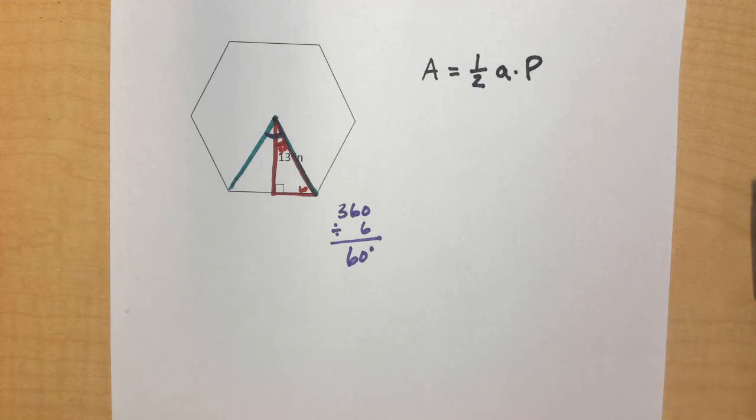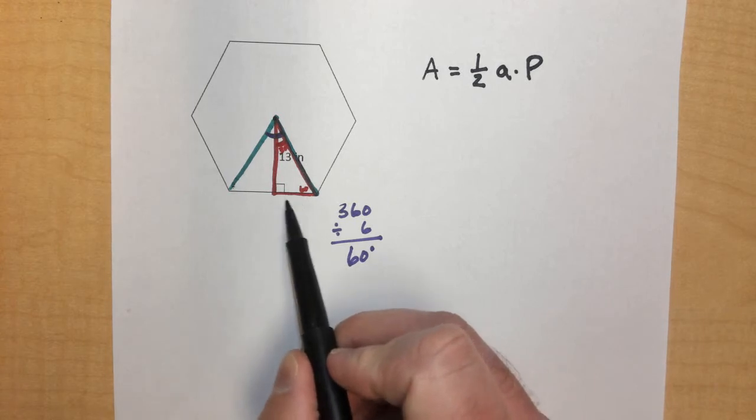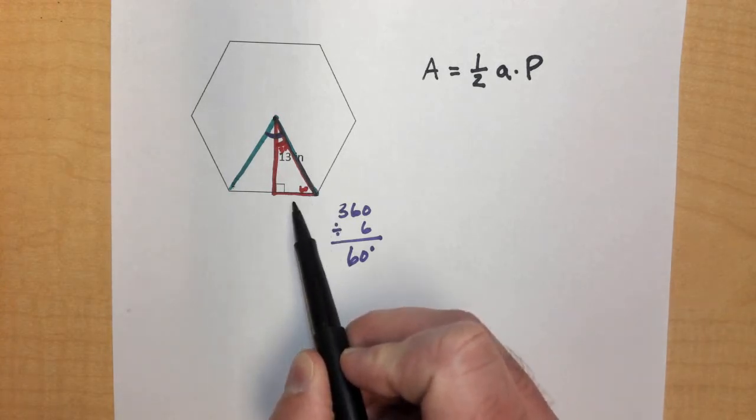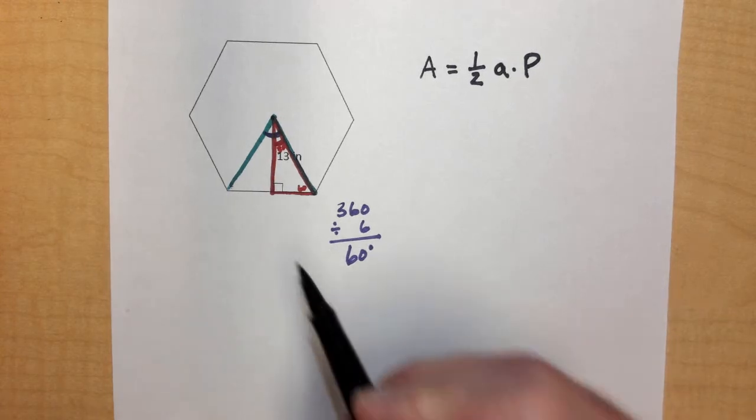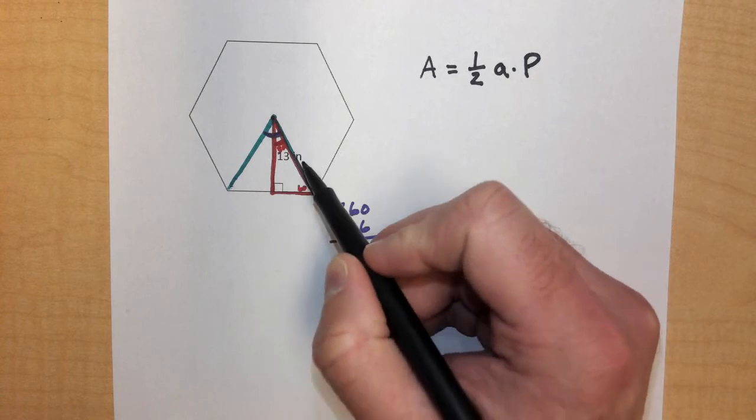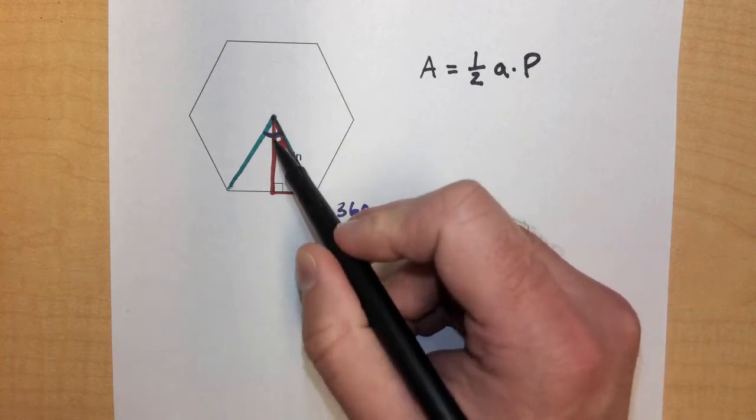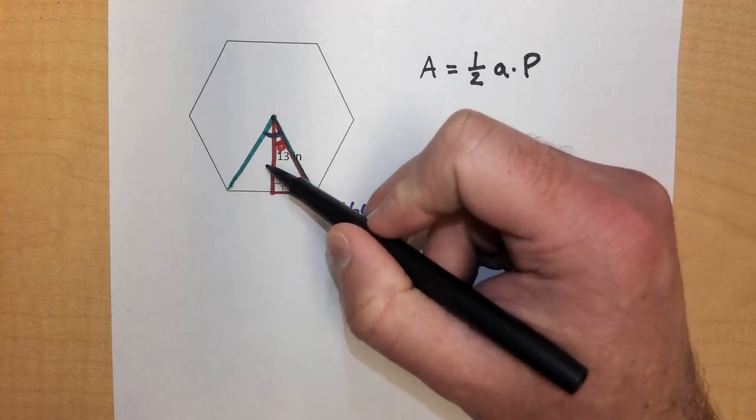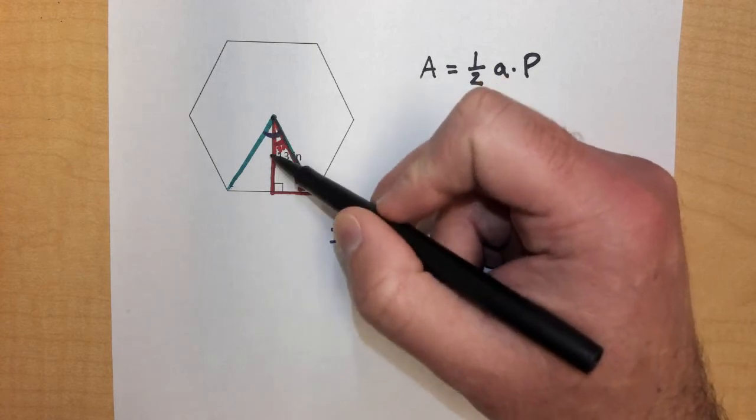So in a 30, 60, 90 triangle, if I know the shorter leg, I can use that shorter leg to solve for both the hypotenuse and the longer leg, given some shortcuts. Whatever this amount is times 2 gives me the hypotenuse, because this is half of the hypotenuse of this triangle here. And whatever this shorter leg is times the square root of 3 will give me this longer leg.